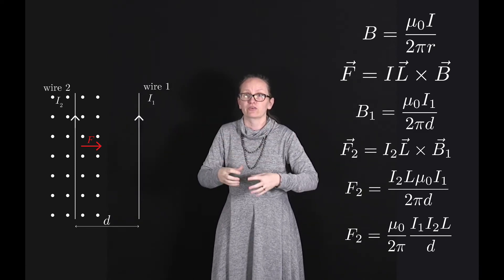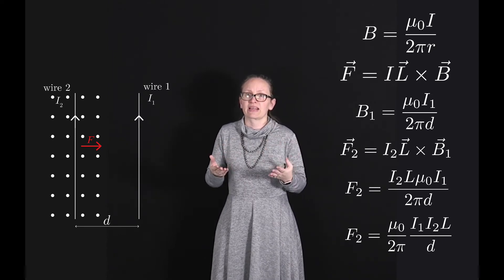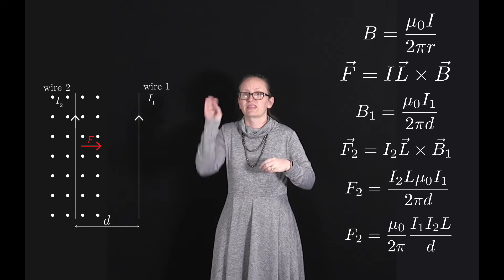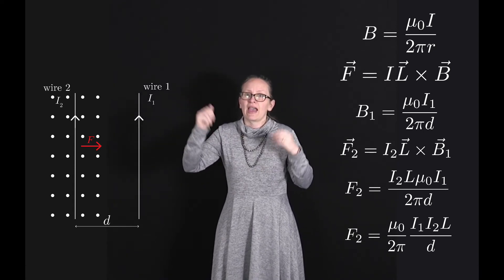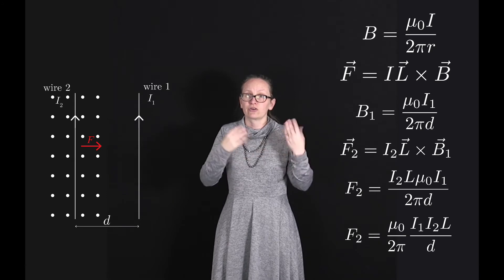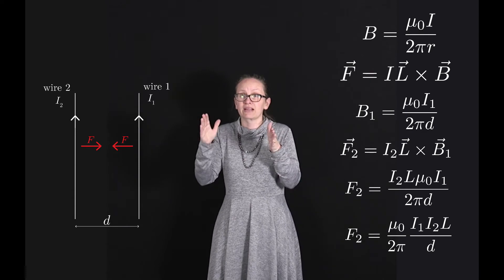So this is an attractive force. Now if we think about wire 1, it also experiences a magnetic field due to wire 2 with very similar expression except replace i₁ with i₂. And so this magnetic field causes it to experience a force and if we substitute everything in we end up with exactly the same magnitude.